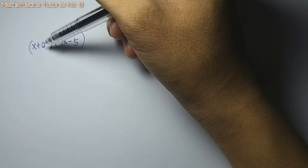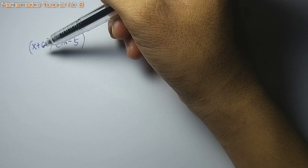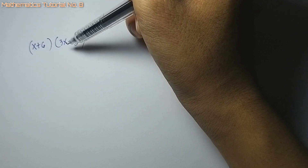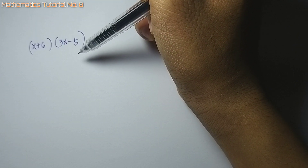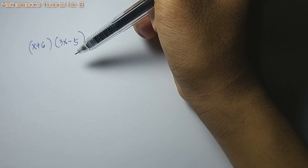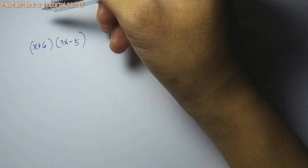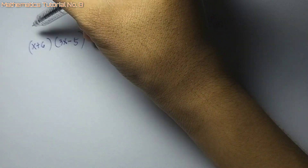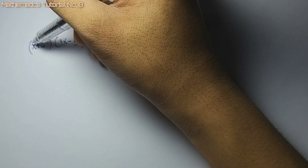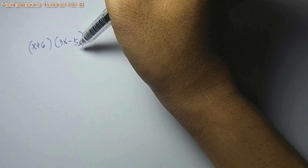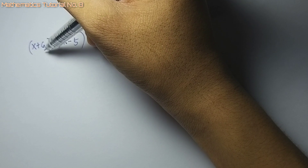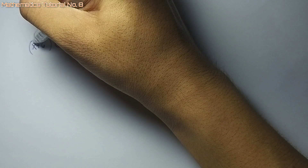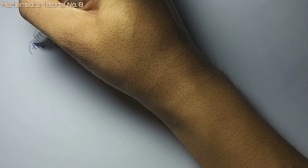Ang giingon sa rule, ang tanan terms dito sa polynomial x plus 6 dapat ma-multiply sa tanan terms dito sa picas nga polynomial. Pagka human i-multiply ang tanan, i-add ang parihas o similar terms. So unahon ang first term — dapat ang atong first term ma-multiply sa tanan terms dito sa picas.